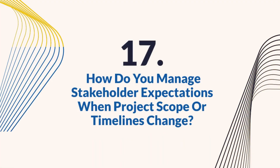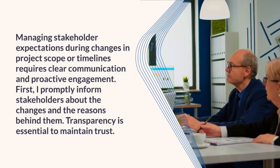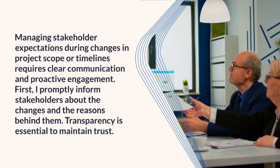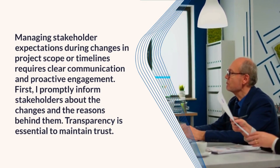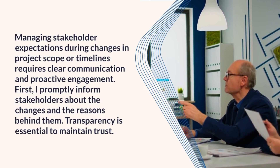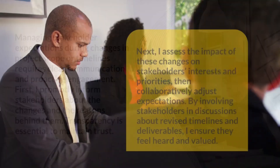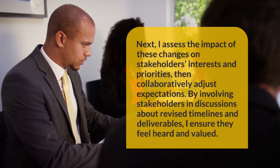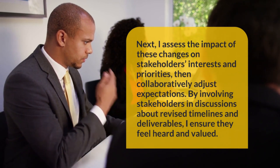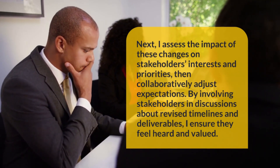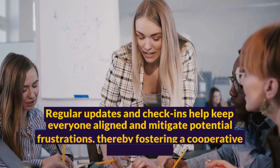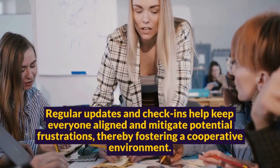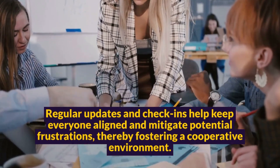Question 17: How do you manage stakeholder expectations when project scope or timelines change? Managing stakeholder expectations during changes in project scope or timelines requires clear communication and proactive engagement. First, I promptly inform stakeholders about the changes and the reasons behind them. Transparency is essential to maintain trust. Next, I assess the impact of these changes on stakeholders' interests and priorities, then collaboratively adjust expectations. By involving stakeholders in discussions about revised timelines and deliverables, I ensure they feel heard and valued. Regular updates and check-ins help keep everyone aligned and mitigate potential frustrations, thereby fostering a cooperative environment.